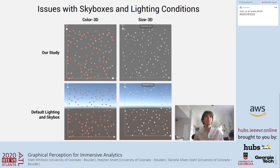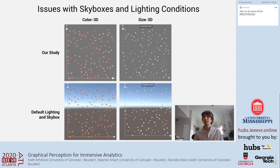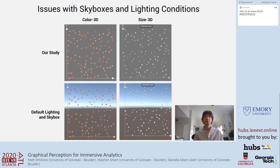This not only has implications for use of color in AR, but also raises the question of whether use of skyboxes in immersive visualization impacts performance. You can see visualizations as participants saw them in VR, and how they would have looked with default skybox and lighting conditions in Unity. For color visualizations in particular, the skybox makes it almost impossible to distinguish differences in color because the white and blue backdrop makes points appear darker than they actually are. White data points can get washed out entirely.